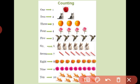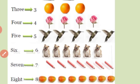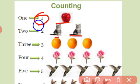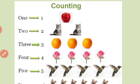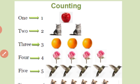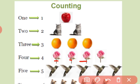Let's start. Count the objects. How many apples here? 1. How many apples? 1. How many cats? 1, 2. 2 cats. How many fruits here? 1, 2, 3. 3. How many roses? 1, 2, 3, 4. 4.